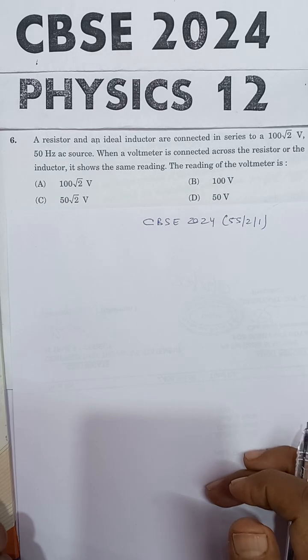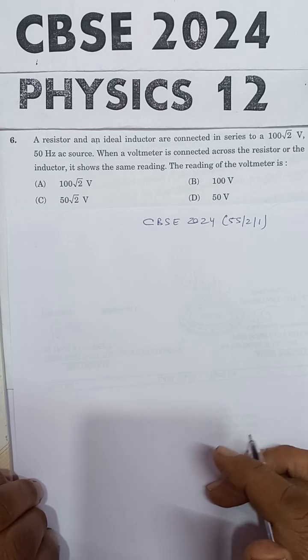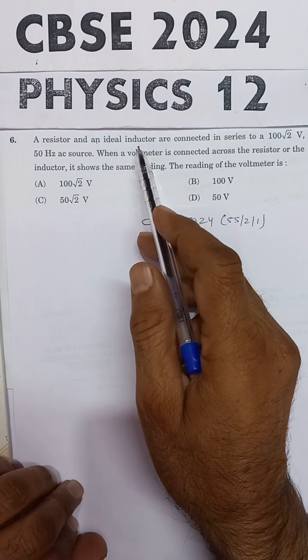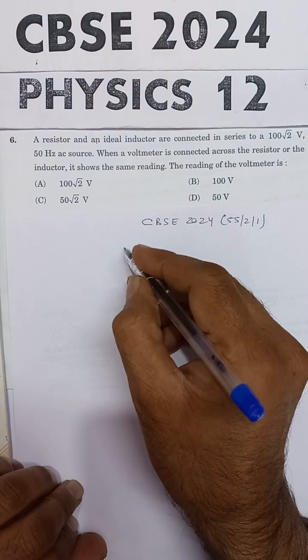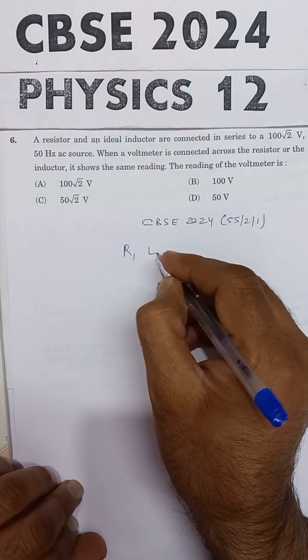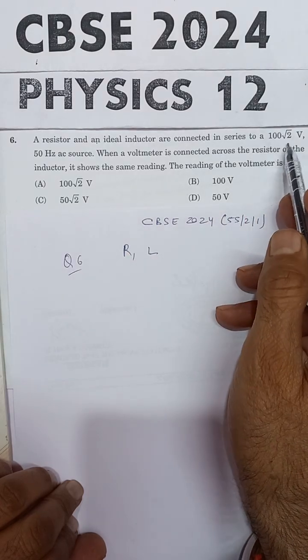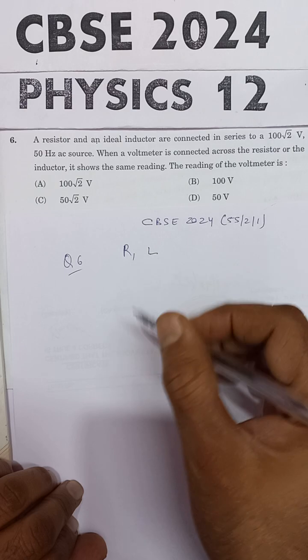This question is from CBSE 2024 Physics Examination. The problem states: A resistor and an ideal inductor are connected in series to a 100 root 2 volt, 50 hertz AC source.